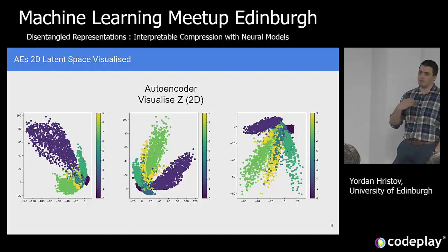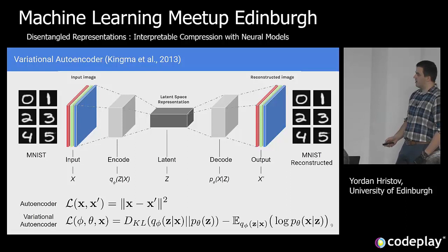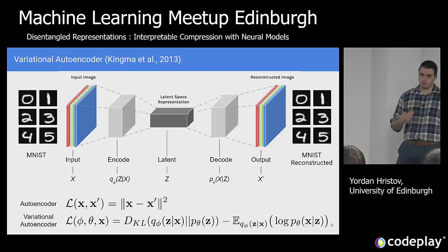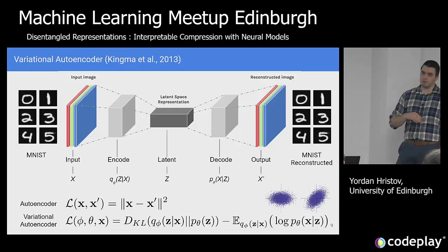So this latent space, or the code, or the compressed version of the image, is not very beautiful from the vanilla autoencoder. What people have done is borrow ideas from variational inference — instead of treating just the reconstruction loss, we look at it from a probabilistic point of view. The important bit is that we have some prior distribution over those latent codes, and we want the distribution we learn in the latent codes to be as close as possible to that prior.